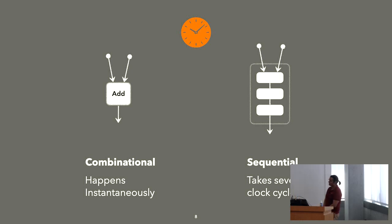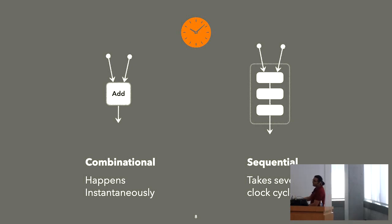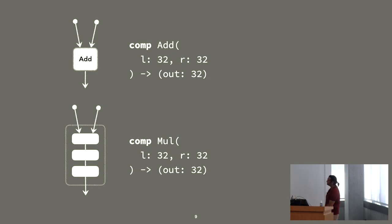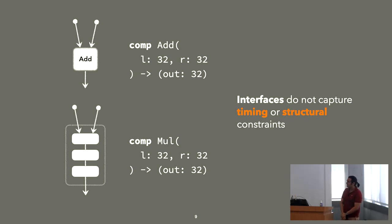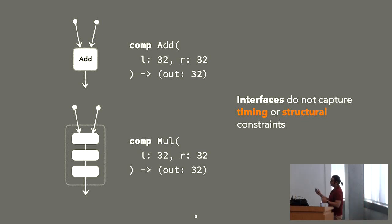After digging into this problem, I realized the fundamental issue is that the adder and multiplier are two different kinds of circuits. The adder is a combinational circuit — you apply your inputs to the adder and you get the output immediately in the same cycle. The multiplier is sequential — it takes several cycles to perform the computation. But here's my problem: I looked at the interfaces carefully, and they look the same. I take two inputs, I produce the output. There's no information about adders being different from multipliers. These interfaces in our hardware description languages don't capture any timing or structural constraints of the hardware.